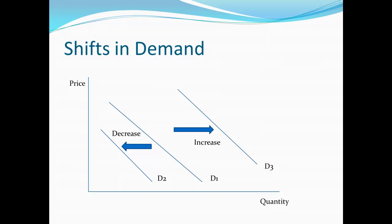When we say demand, we're talking about a relationship between prices and quantities. So if there's a change in demand — an increase or a decrease — it is that relationship that is changing. An increase in demand means that at any price, we're willing to buy more than we were before. With a decrease, at any price, we're willing to buy less than before. The relationship between prices and quantities has changed.